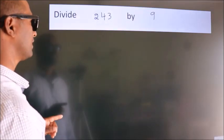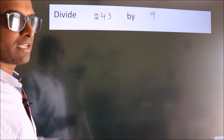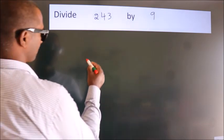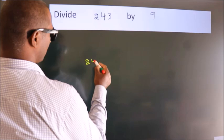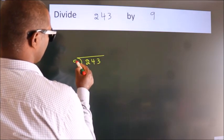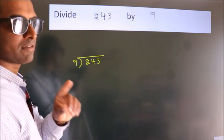Divide 243 by 9. To do this division, we should frame it in this way. 243 here, 9 here. This is your step 1.